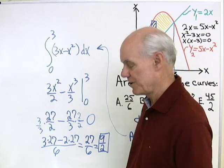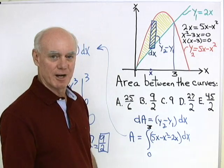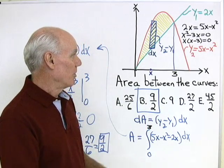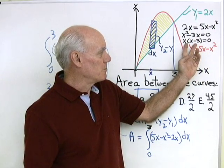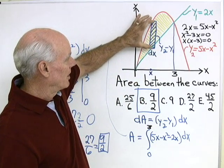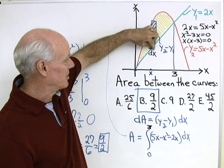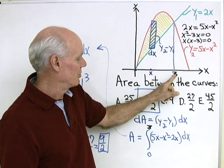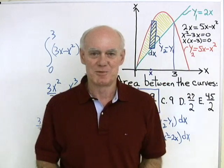The area of that shaded region is 9 halves. Looking back at our multiple choice question and the possible answers, I see I have 9 over 2 for my answer. Pretty simple, straightforward problem. The equations are easy to deal with, nice points of intersection. All you have to do is draw in that little test rectangle, see that the height is this curve minus this curve, thickness is dx, and integrate from 0 to 3. It turns out to be pretty easy to integrate. Do a little arithmetic and the answer comes out to be 9 halves.